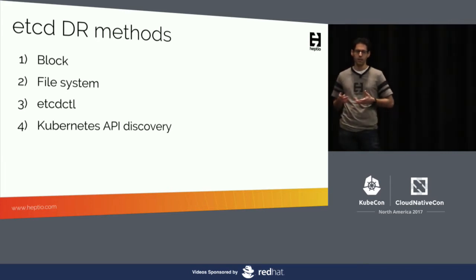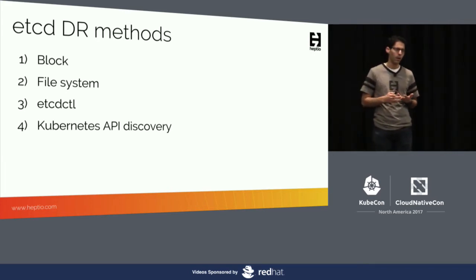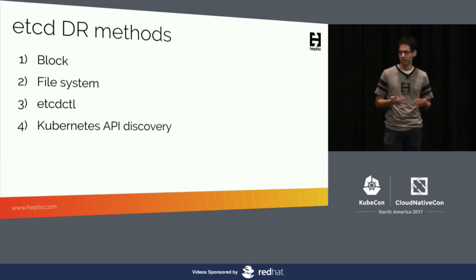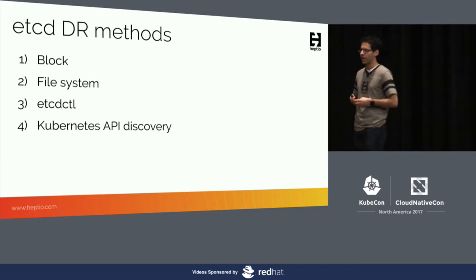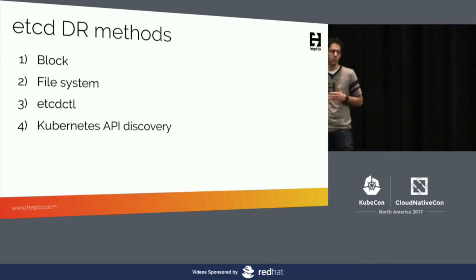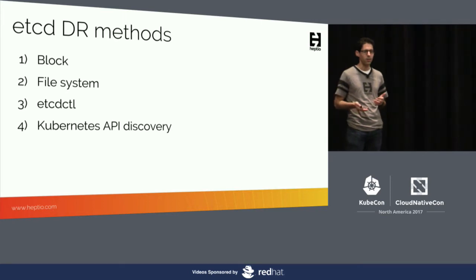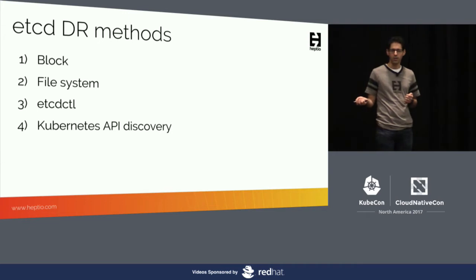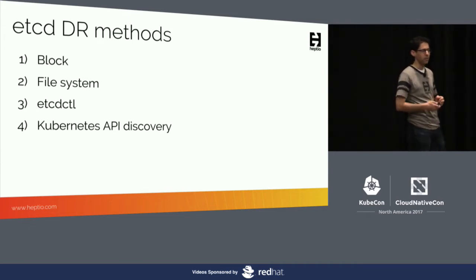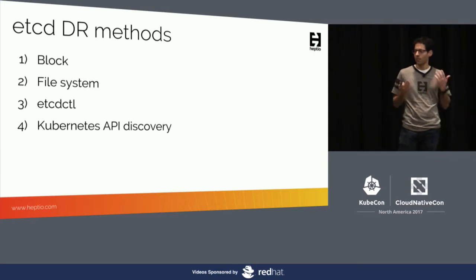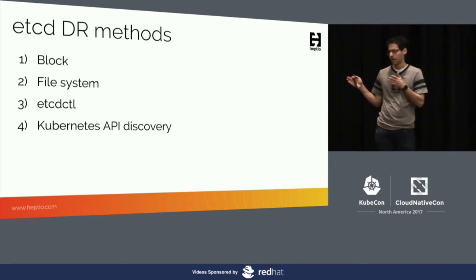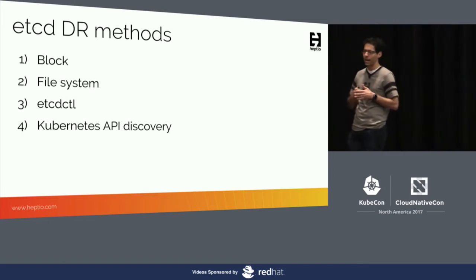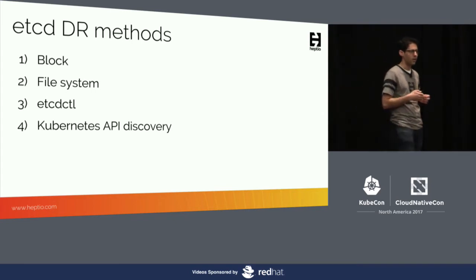At the block level, you could take a backup of the partition or disk where the etcd data directory resides — this is where all your etcd state is. If you lose one of your members, and if you have a highly available etcd cluster (and you definitely should), if you restore from either the block device or at the file system level, when your member comes back online, it will get a delta of the data that happened in the cluster since it was offline. The surviving members will send a snapshot of what it needs to catch up, so your cluster can become whole again.